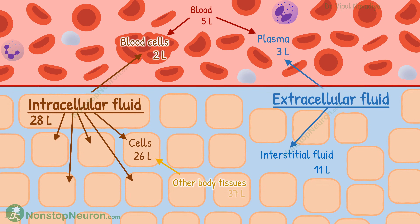This 3 liters of plasma plus 11 liters of interstitial fluid makes a total of about 14 liters of extracellular fluid. This is about 20% of total body weight and about one-third of the total body water.